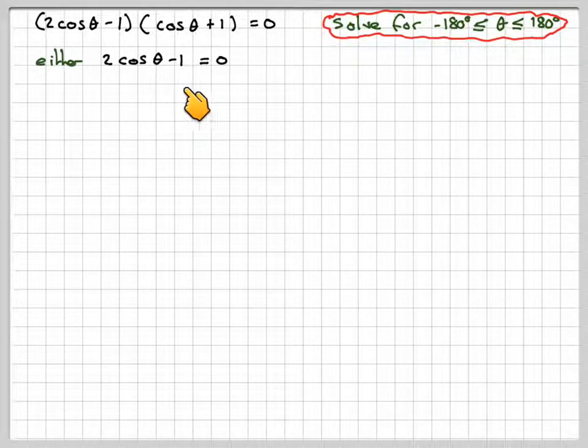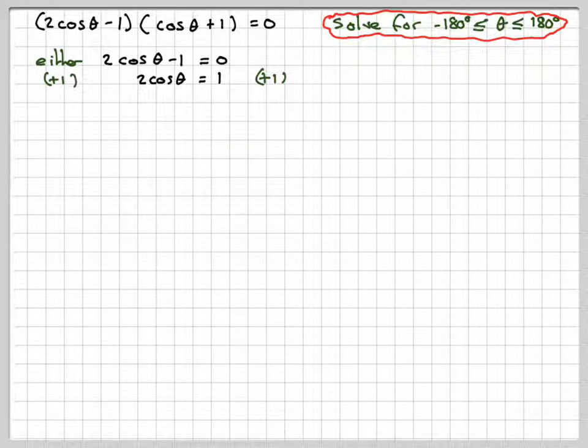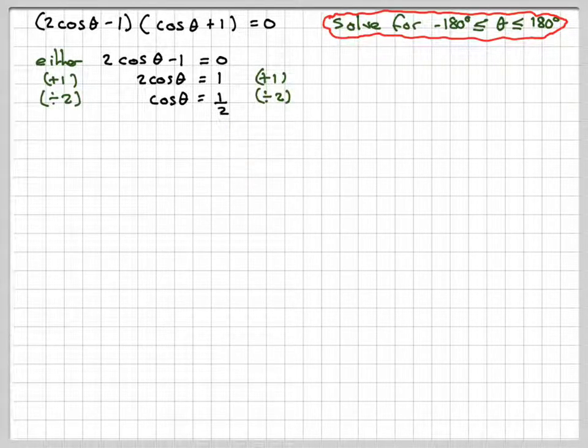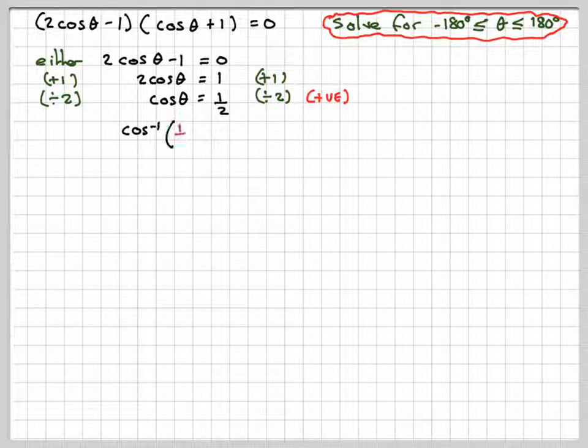Either 2 cos theta minus 1 equals 0. So if we add 1 to both sides we're going to get 2 cos theta equals 1. Dividing by 2 we're going to get cos theta equals 1 half. This is positive. We note that this is positive. And then cos inverse of 1 half is 60.